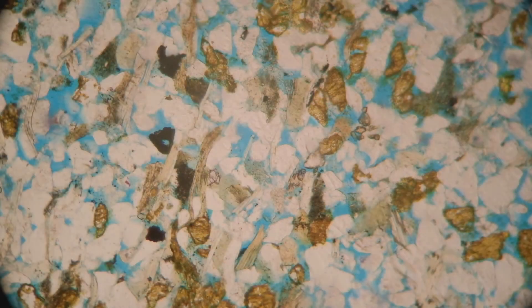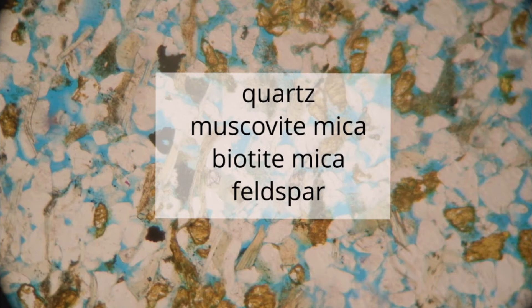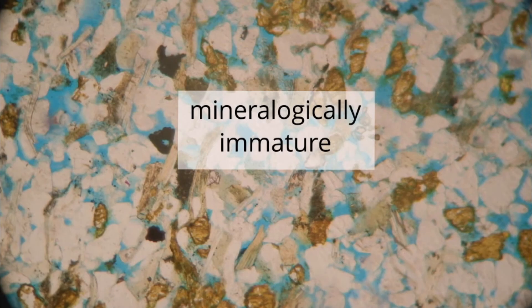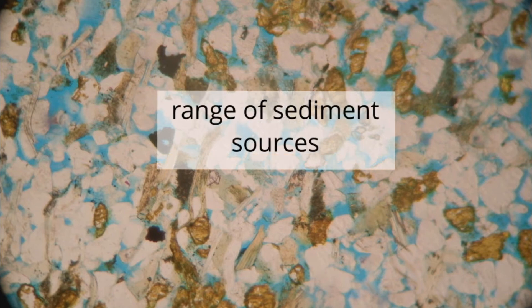In summary, this rock sample is well sorted and texturally mature because it has a small range of grain sizes and is generally composed of rounded to sub-rounded grains. This rock is made of grains of quartz, muscovite mica, biotite mica and feldspar. It is mineralogically immature because it has a relatively high content of two types of feldspar which are unstable at Earth's surface. Mineralogically immature sediments may have been deposited close to their source area or may have been rapidly transported and deposited with little reworking. The mixture of quartz grains may indicate more than one source, and the relative abundance of feldspar may also suggest a range of sources for the detrital material in this rock.